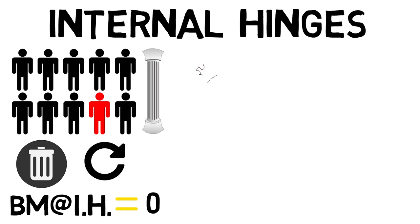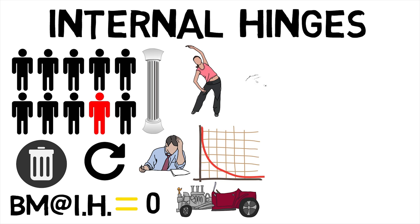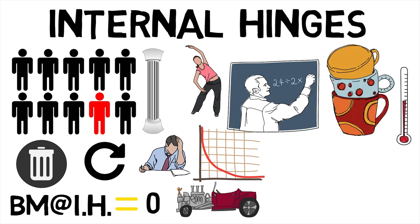An internal hinge makes the structure more flexible. It allows the structure to move which reduces reactive stresses. Internal hinges are sometimes provided to solve the problems created by additional stresses such as settlement or temperature stresses.